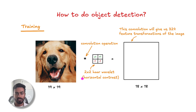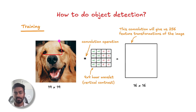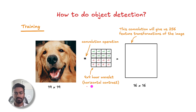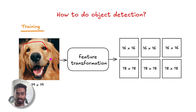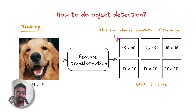Now, we can repeat the same for the 2x2 horizontal Haar wavelet and then the diagonal contrast Haar wavelet. And also, in order to capture larger structural changes in the image, we are going to use 4x4 versions of these Haar wavelets. So we're going to perform a 4x4 convolution operation. If we keep sliding the windows with a stride of 1, we're going to end up with a 16x16 matrix of feature transformations, which is 256 values. And we're going to do this for the horizontal as well as the diagonal contrast Haar wavelet. So effectively, what we've done is taken a 19x19 image and applied a feature transformation using these wavelets in order to extract information — there are going to be 1740 activations. This is essentially the coded representation of this complex image.